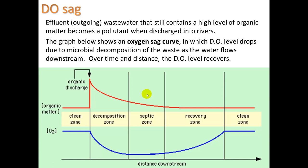I want to mention the DO SAG — dissolved oxygen SAG. This is where effluent, or outgoing wastewater that still contains a high level of organic matter, becomes a pollutant when discharged into rivers. We try to remove all organic matter using microorganisms in the aeration tank, but some can still make its way out. The oxygen SAG curve shows how DO level drops due to microbial decomposition of waste as water flows downstream.